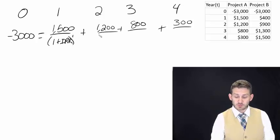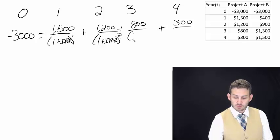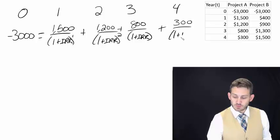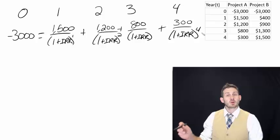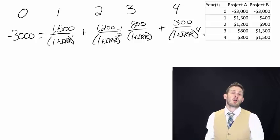And our discounts here are going to look just like this, one plus IRR to the first, one plus IRR to the second, one plus IRR to the third, and one plus IRR to the fourth. And what we're doing now is that we are solving for IRR.